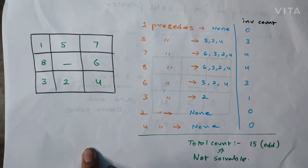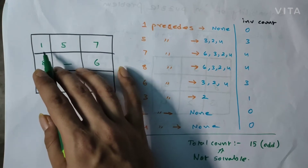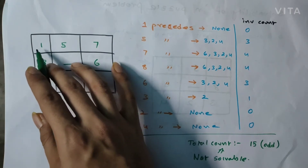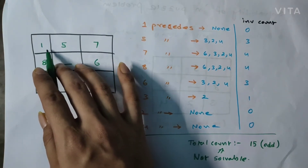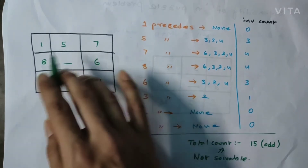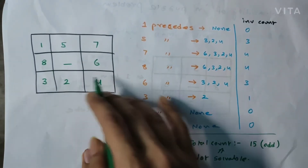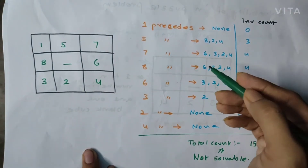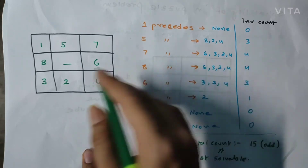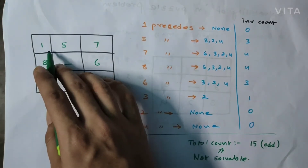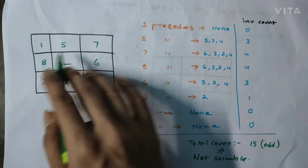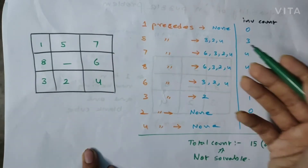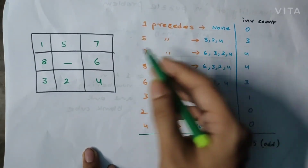Inversion count is calculated by going row-wise through the matrix — first row, then second row, then third row — and for each number, we check whether it is preceding any lower-valued numbers that come after it in the sequence.